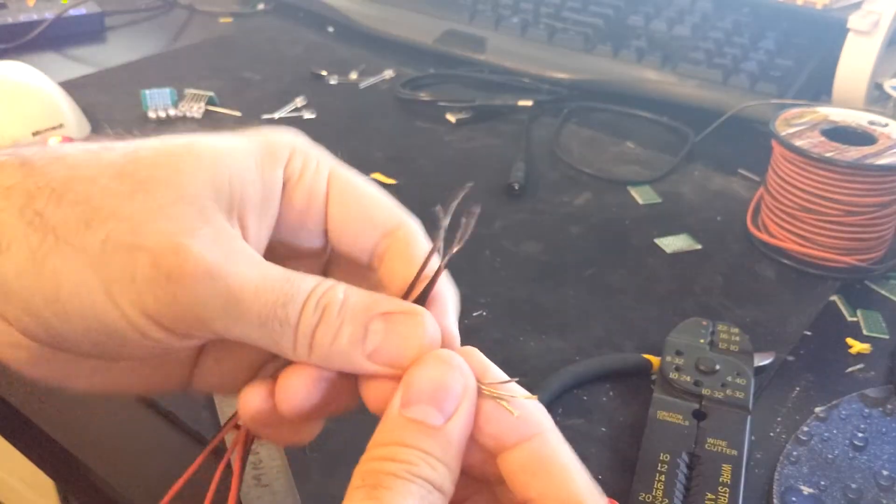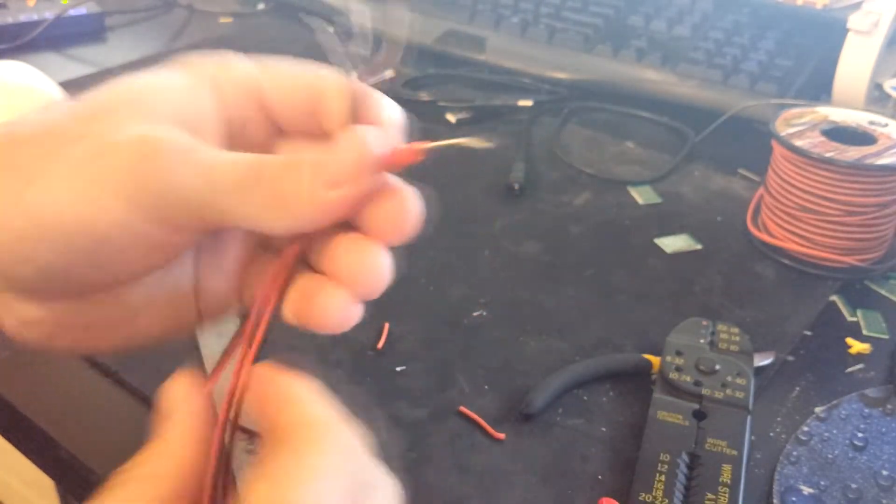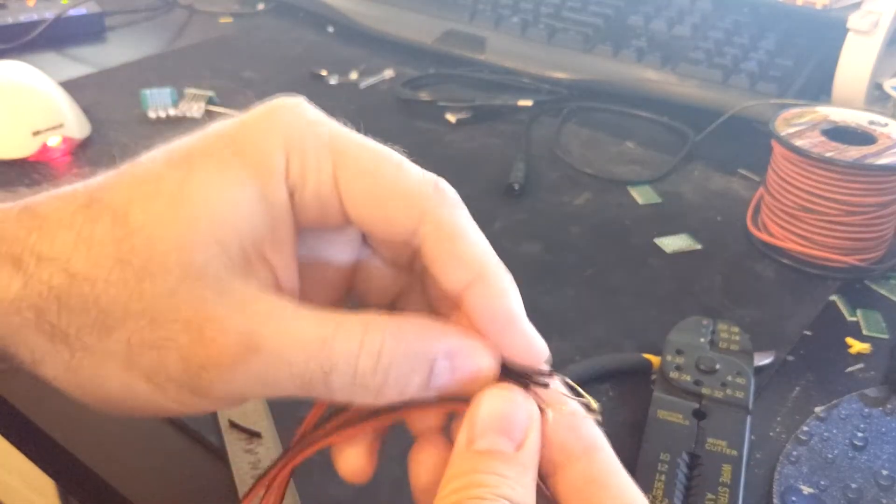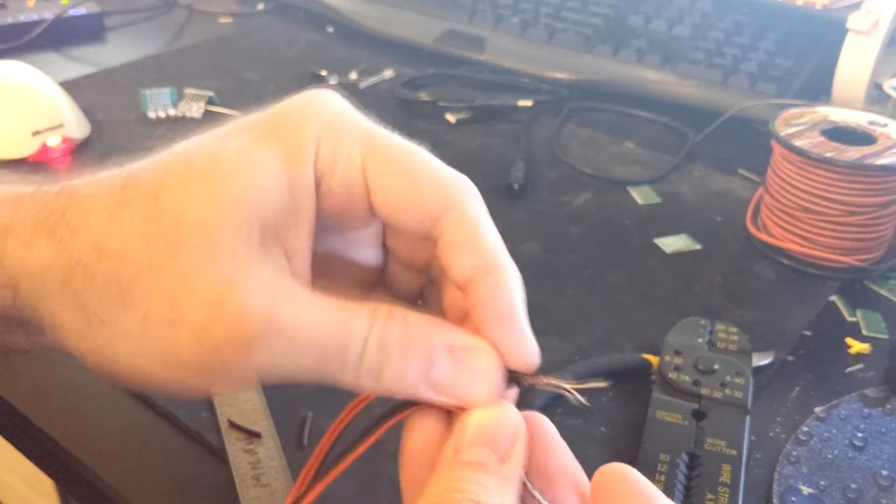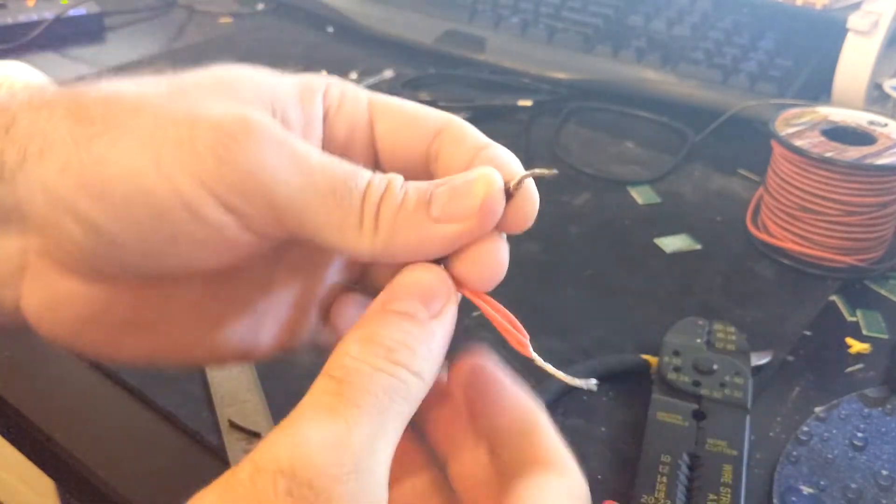For one side of your wires twist the red wires together. Do the same for the black wires. Should look like this.